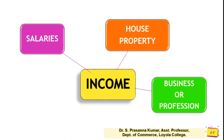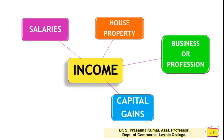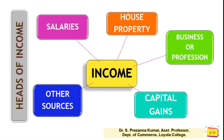The third head is income from business — if you buy and sell goods, the profit earned is income from business. The fourth is income from profession — money earned by professionals such as doctors, auditors, lawyers, and engineers. The fifth is capital gains — income from the sale of a capital asset. Any income beyond these four heads is called income from other sources.